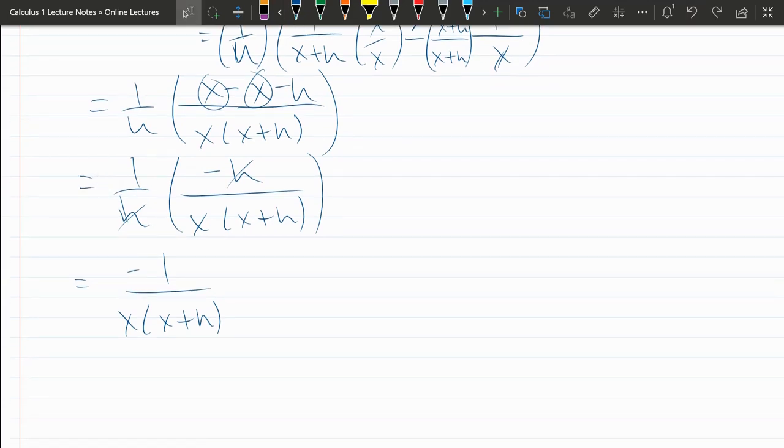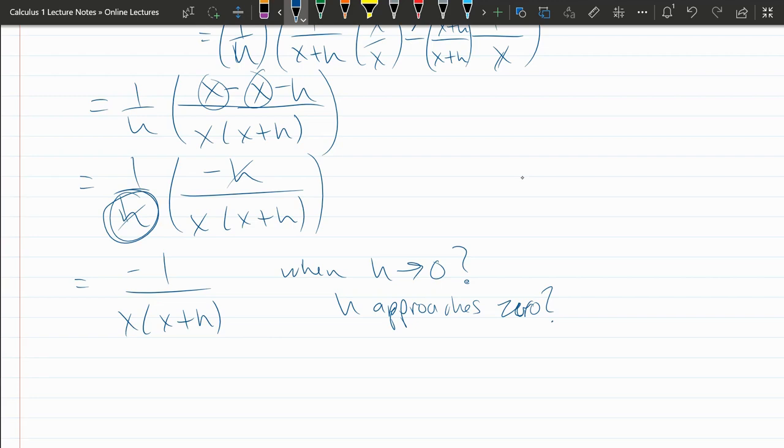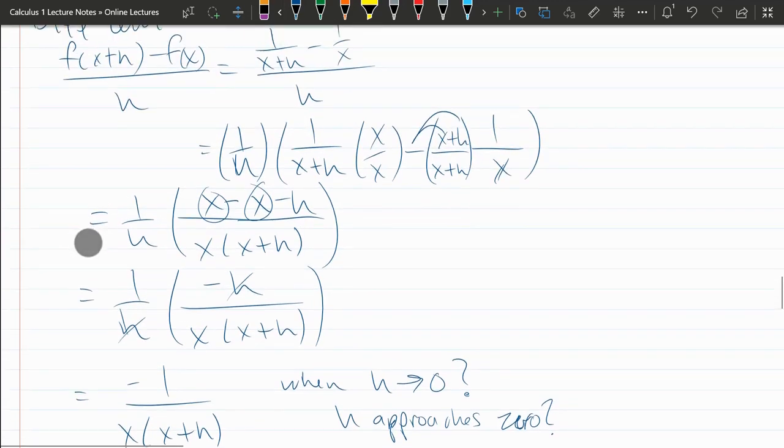And next, we are going to see what happens when h gets very small. So what happens when h approaches zero? And again, I could not think about that before because h here would be dividing by zero. That's why you have to get rid of that h.